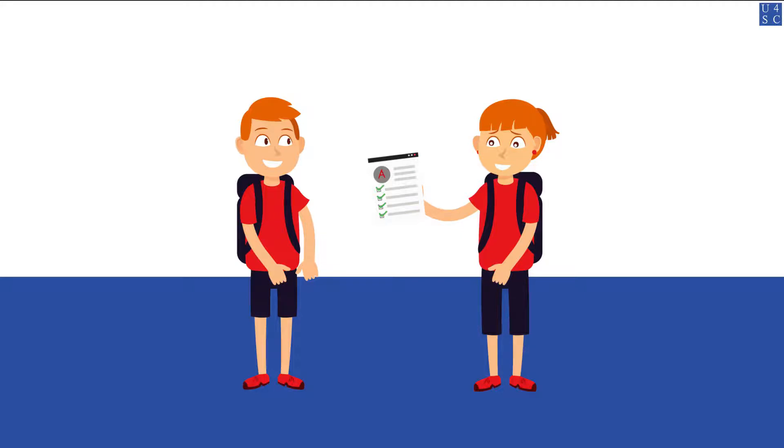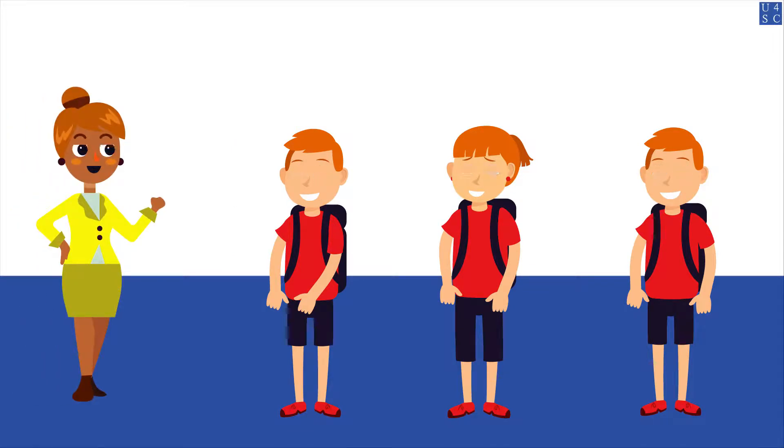Rather than risk failing the class, you decide on the class with the teacher your brother took a class with. You probably decided on the teacher that your brother knew because as humans we tend to rely on what is comfortable and familiar to us.